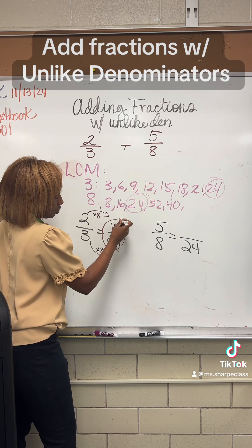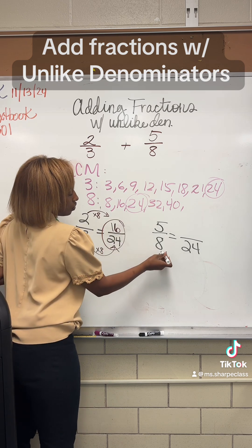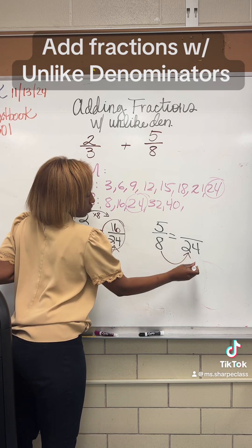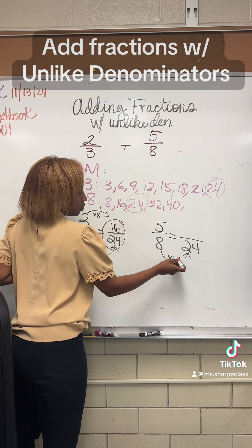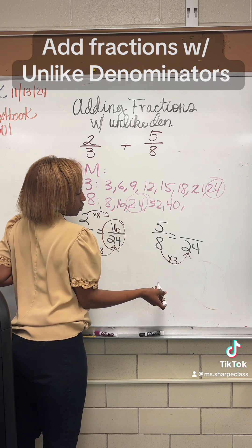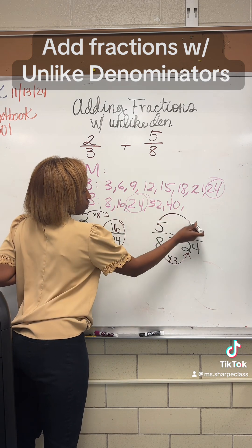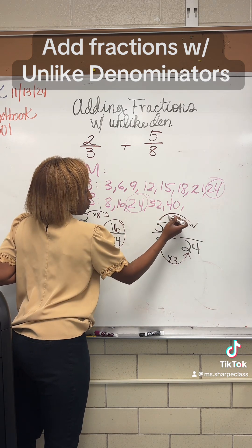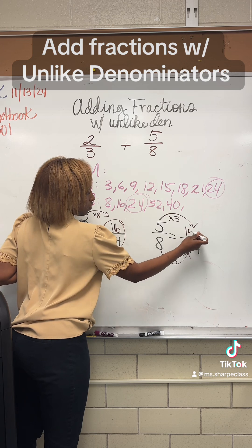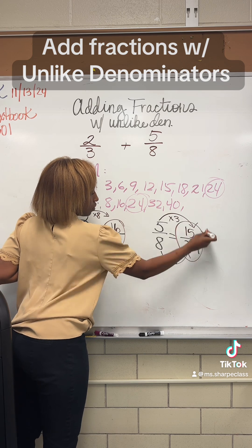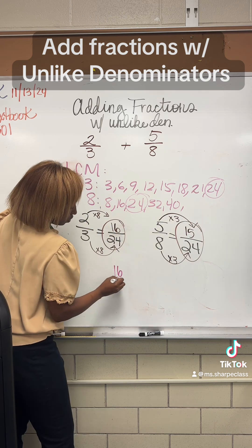So if we're multiplying 8 at the bottom, we must multiply 8 at the top. If we're multiplying 3 at the bottom, we're multiplying 3 at the top. And so we'll end up with 16 over 24 and 15 over 24.